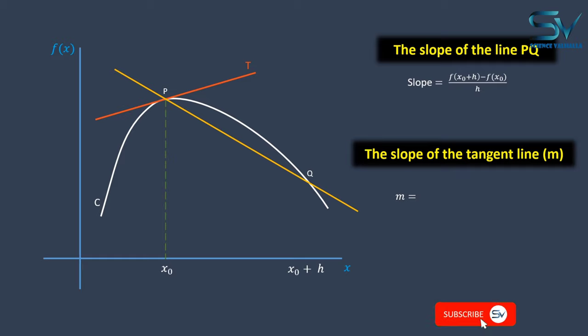If we take the point q of the secant line and move it towards the p-point, we can see that the h distance is constantly decreasing.